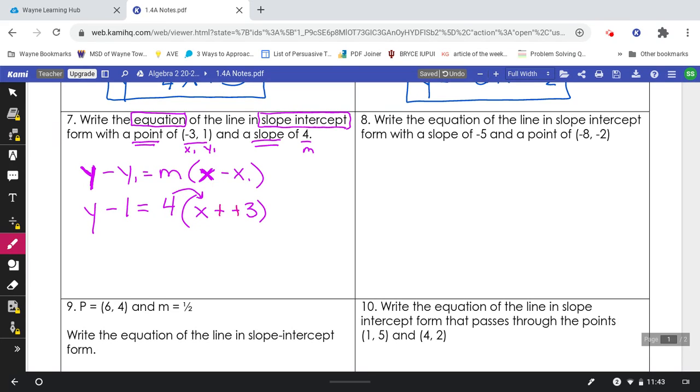You are going to distribute the 4. That gets us y minus 1 equals 4x plus 12. And slope intercept form means they want us to solve for y. So we want to get y by itself by adding 1. This results in a final answer of 4x plus 13. Once more we distributed the 4 and then move the 1 to the other side.